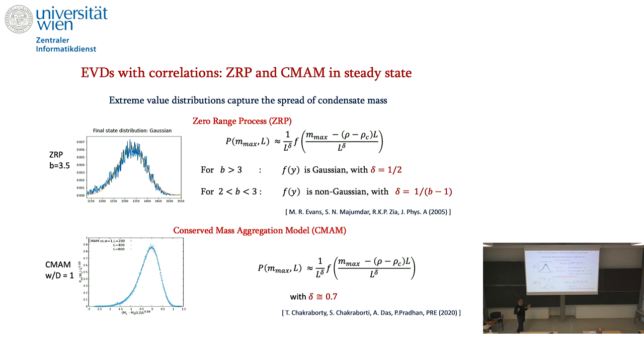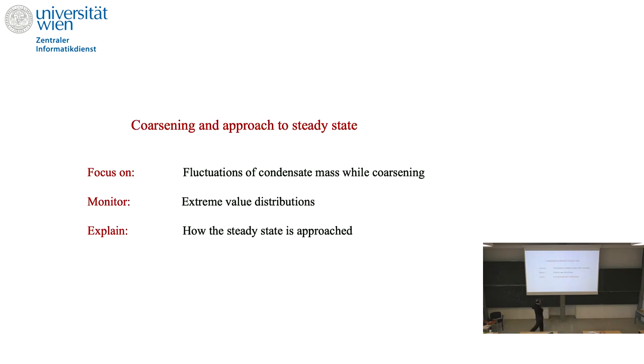This is my summary of the steady-state properties. My interest or aim today is to tell you how is the steady-state reached. I'll focus on fluctuations. We'll do that by monitoring extreme value distributions. Now you might ask what is there to explain, because you're coarsening and you reach a steady state. It turns out there's some strange thing that happens. So that needs explanation. And we'll try to at least plausibly explain.